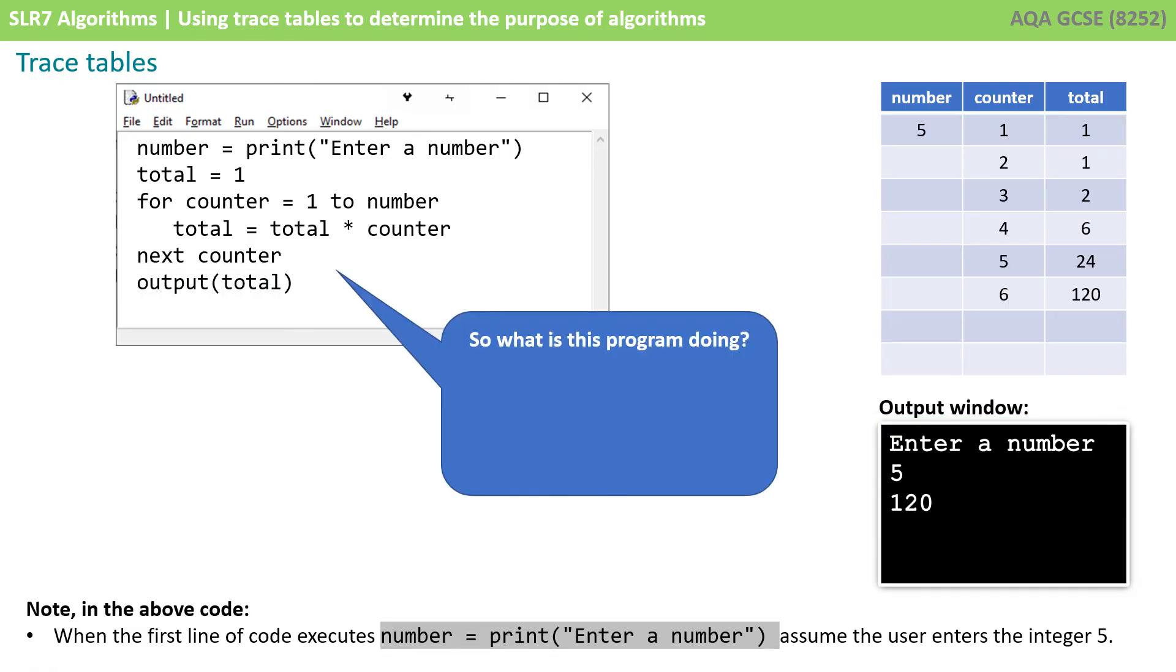So what is this program actually doing? Well, having stepped through it line by line, noting down the content, noting down the output, noting down the variables as they change, you've probably figured it out. It's outputting the factorial of the number entered. Factorial five, for example, is one times two times three times four times five, which is 120, and it's the value we ended up with.